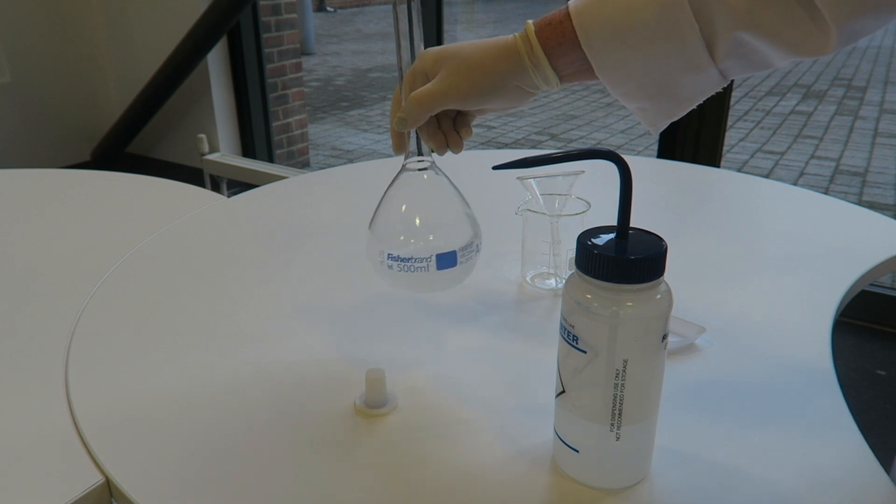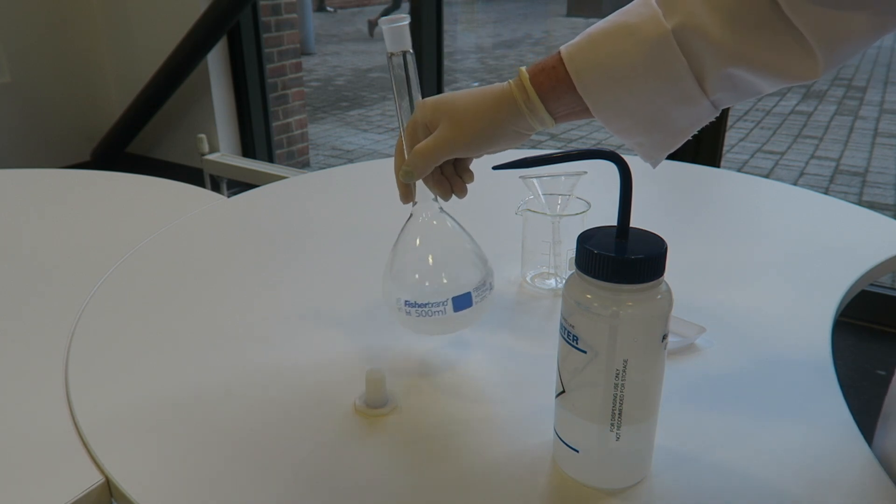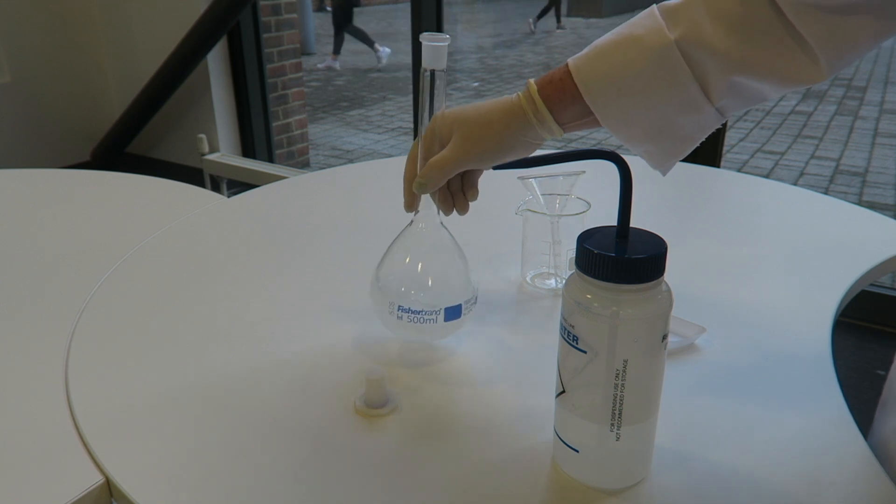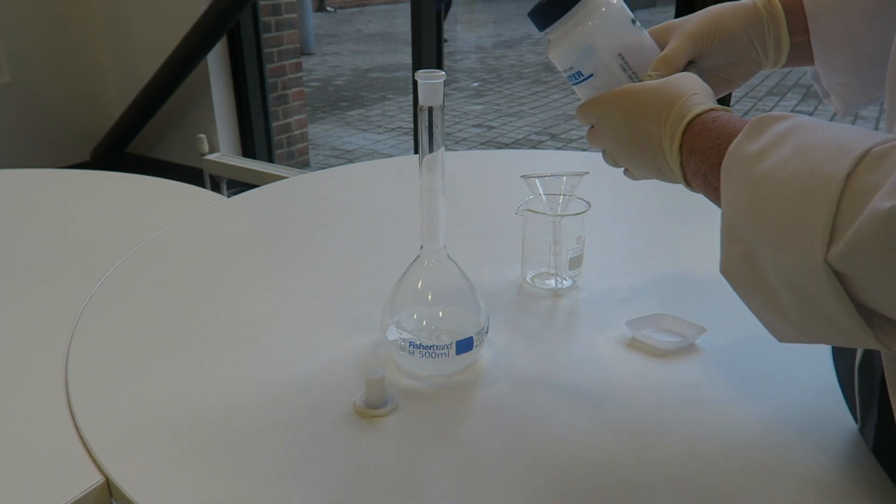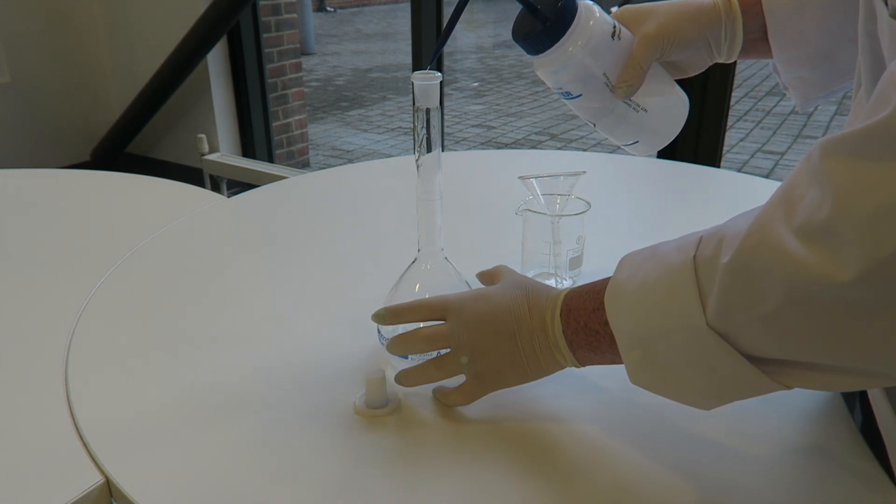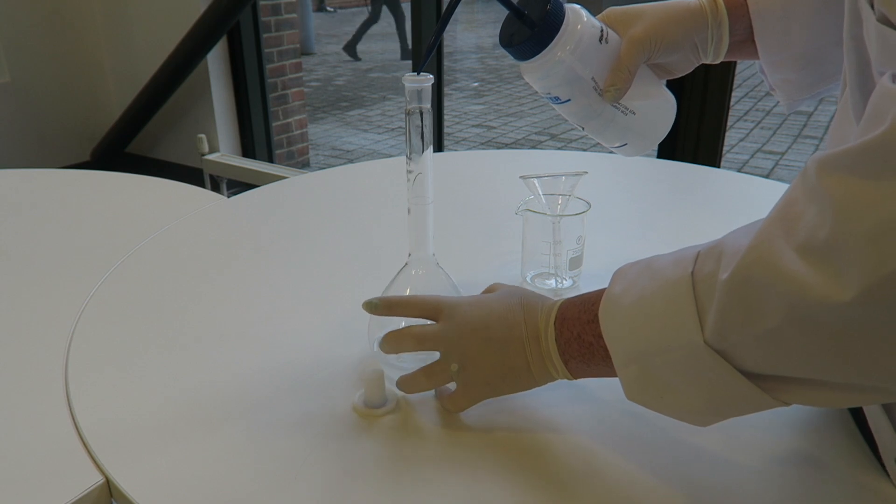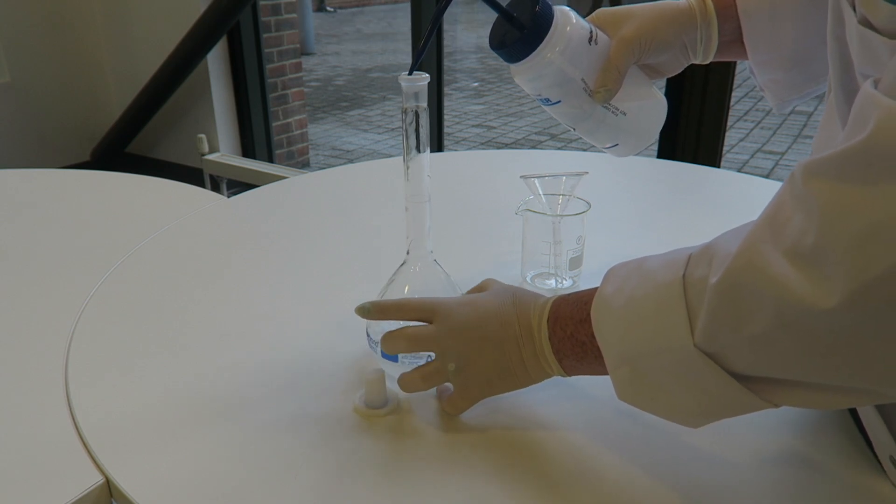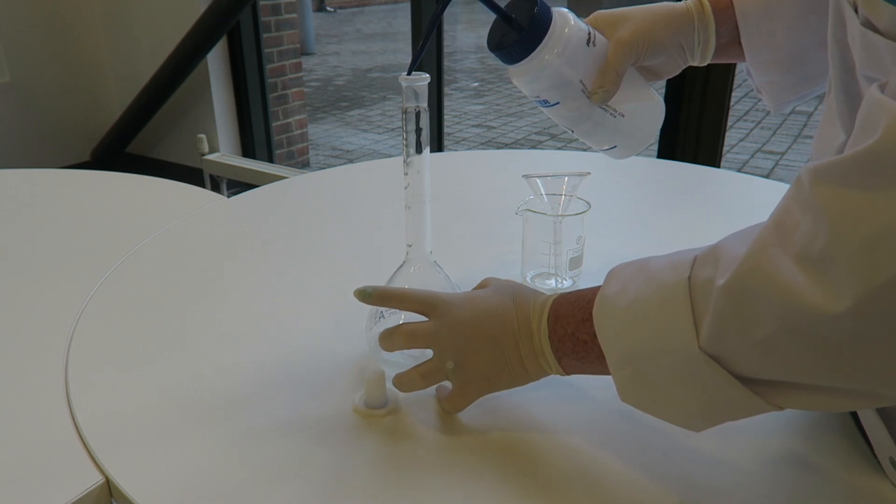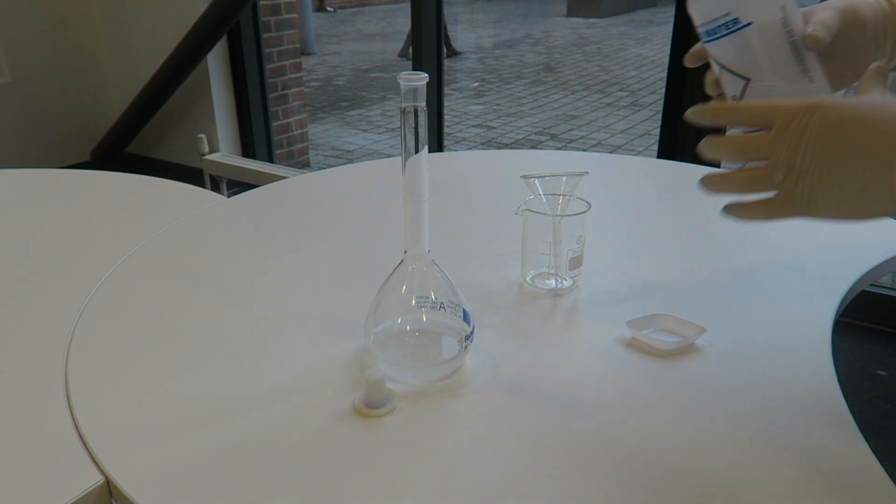We now need this to dissolve. So we can put more water in, just going around the neck of the volumetric to make sure any powder that is on the side there isn't missed.